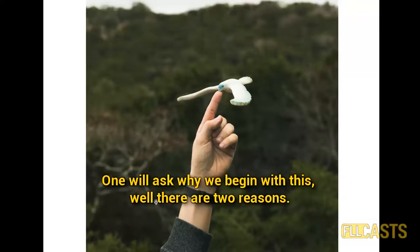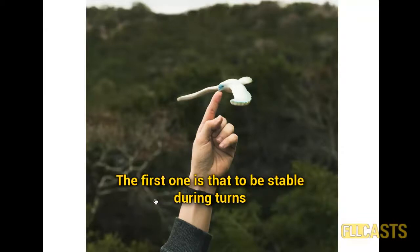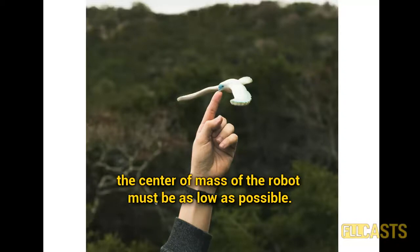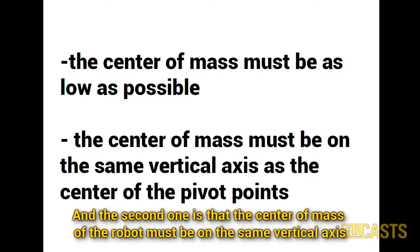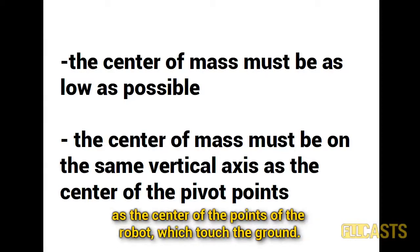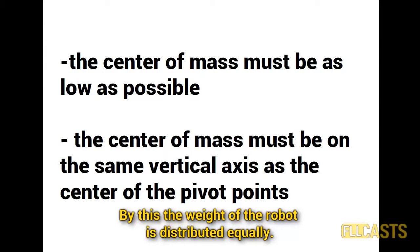One will ask why we begin with this. Well, there are two reasons. The first one is that to be stable during turns the center of mass must be as low as possible. And the second one is that the center of mass must be on the same vertical axis as the center of the points of the robot which touch the ground. By this the weight of the robot is distributed equally.